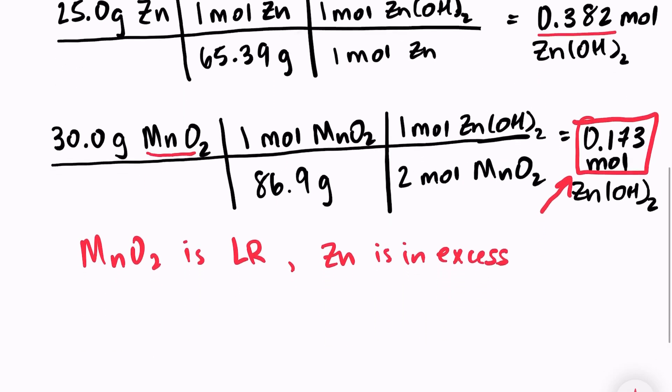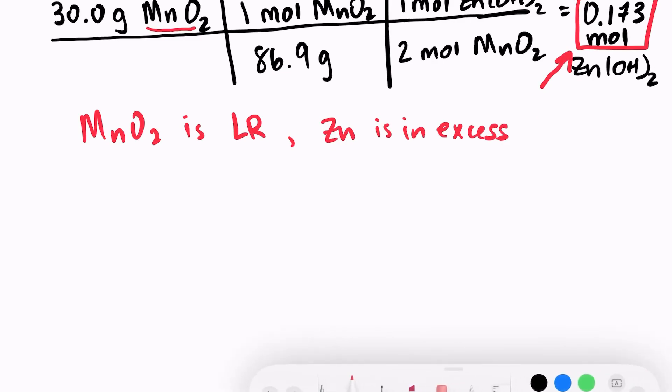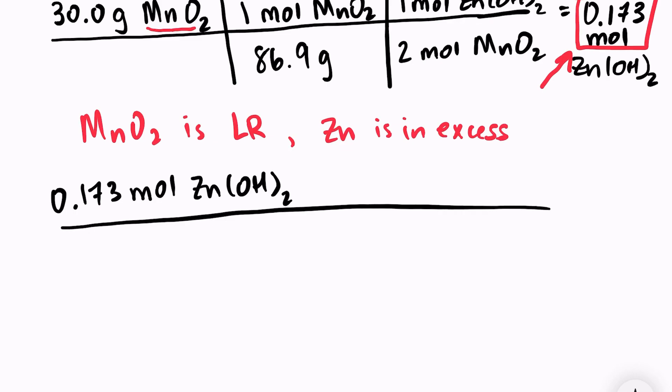And the last step is just to put this number into grams. So 0.173 moles of zinc hydroxide over one mole and the molar mass of zinc hydroxide. I can just look on the periodic table. I have zinc, two oxygens and two hydrogens which gives me a mass of about 99.4 grams.